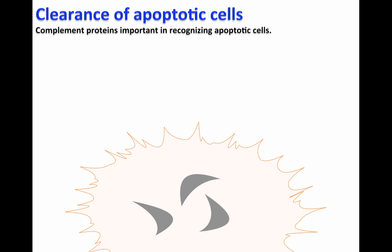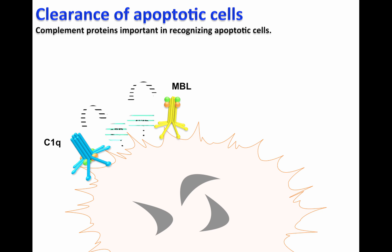Apoptosis, also known as programmed cell death, is a very common feature in organisms through life, being an essential process during development and tissue homeostasis, starting already at the level of embryogenesis. Apoptosis is the primary mechanism by which organisms dispose of unwanted cells. It has been shown that the complement system plays an essential role in the removal of apoptotic cells. In fact, apoptotic cells acquire the capacity to bind several complement proteins, such as C1Q and MBL, which are important in the activation of the complement system leading to C3B deposition.